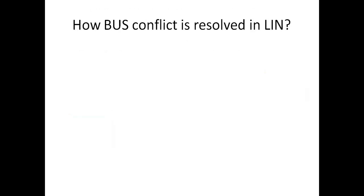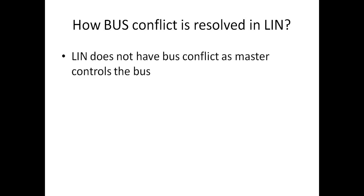How is bus conflict resolved in LIN? As mentioned earlier, there is only one master and multiple slaves, so there is no bus conflict. The master knows who has to send and who has to receive the data, so LIN doesn't have any bus conflict as the master decides who has to transmit or receive.